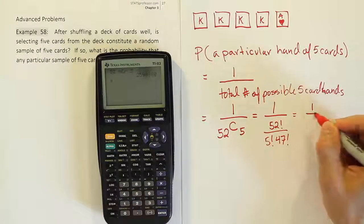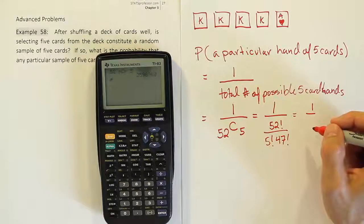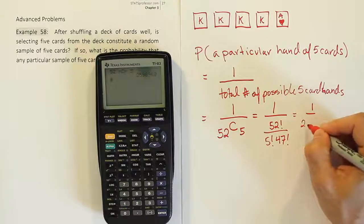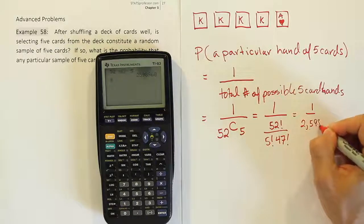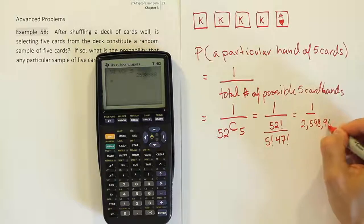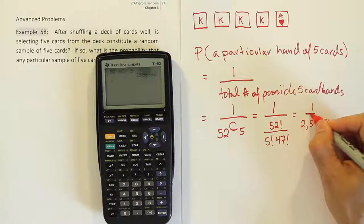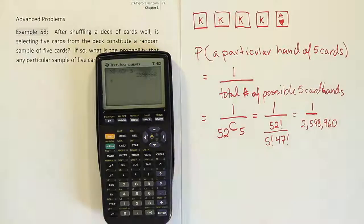So this is a pretty big number. It's 2.6 million roughly. It's 2,598,960 unique five card hands that can occur when drawing five cards from the deck.